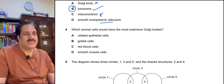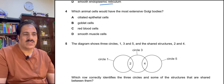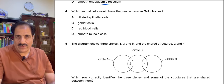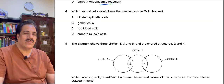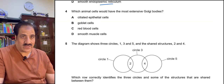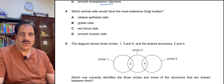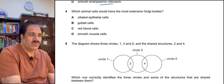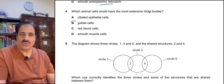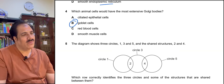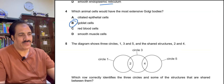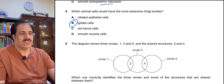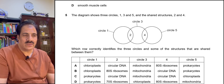Question 4: Which animal cells would have the most extensive Golgi bodies? Golgi bodies are most abundant in cells with a secretion function — those that release proteins or other secretions. Goblet cells produce mucus, so they would have the most extensive network of Golgi bodies. Goblet cells is the correct answer.